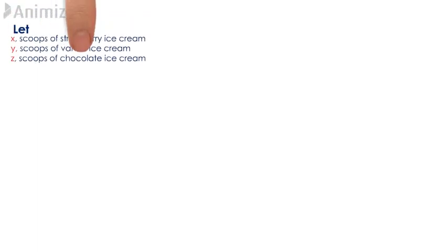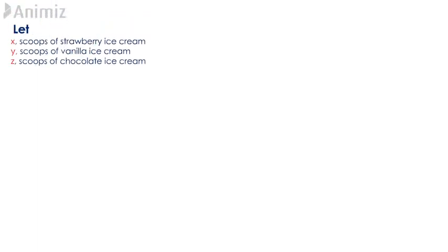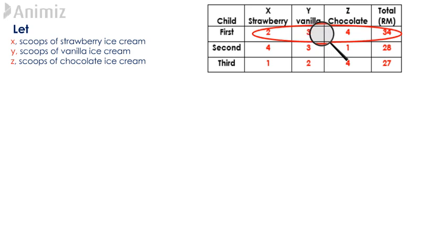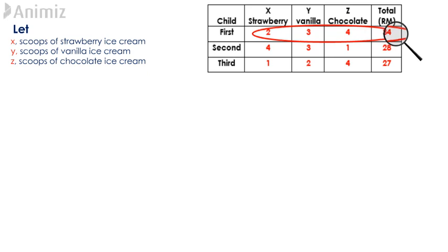First of all, we let X, Y and Z represent the scoops of strawberry ice cream, vanilla ice cream and chocolate ice cream respectively. For the first child, she buys ice cream which costs RM2 for a scoop of strawberry, RM3 for a scoop of vanilla and RM4 for a scoop of chocolate and spends RM34 in total on the first child.